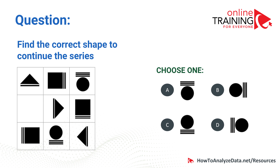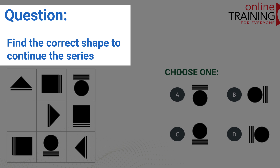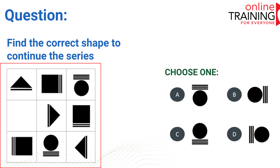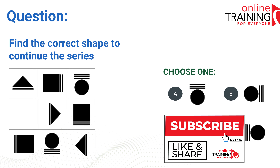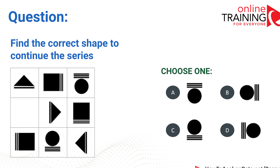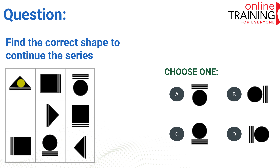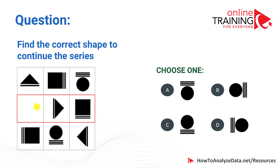Now let's look at a very complex question seen in logical reasoning, psychometric, and numerical reasoning tests. Find the correct shape to continue the series. We have a 3x3 matrix with eight shapes populated and one missing, with four choices. There are two patterns: a shape pattern and a line pattern. The shape pattern cycles through triangle, square, and circle — so the missing shape is a circle. All answer choices are circles, confirming this first pattern.